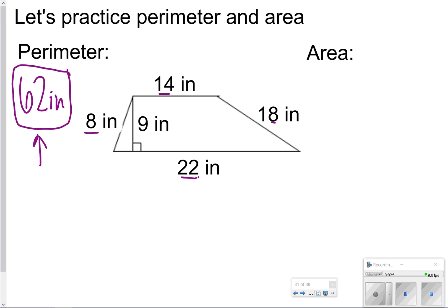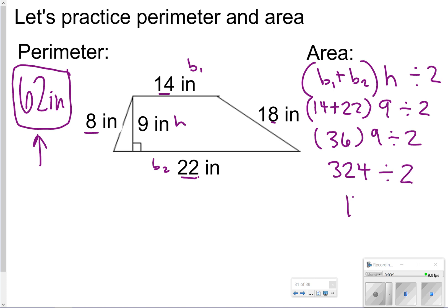For the area, remember we're going to be doing it a little bit differently. We're going to be adding the bases together, so B1 plus B2, multiplying it by the height, and then dividing everything by 2. So this is what that looks like. My B1 and B2 are my two parallel lines: 14 plus 22. Then I'm going to multiply by the height which is 9, and then I'll divide that answer by 2. So I'm typing in my calculator 14 plus 22—that is 36—and then I'm going to take 36 and multiply it by 9. That is 324, and then I'm going to divide it by 2 and I'm going to get 162 inches squared. So once again, I added the bases, multiplied by the height, and then I divided everything by 2.